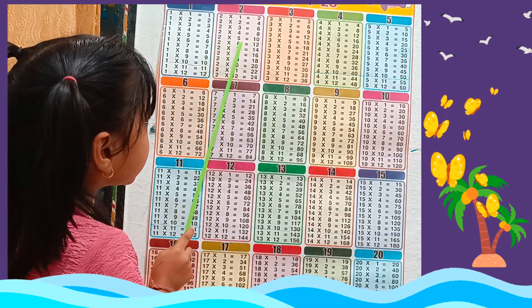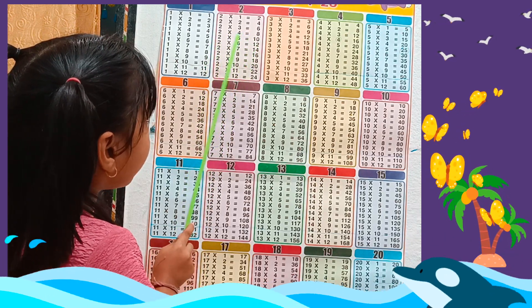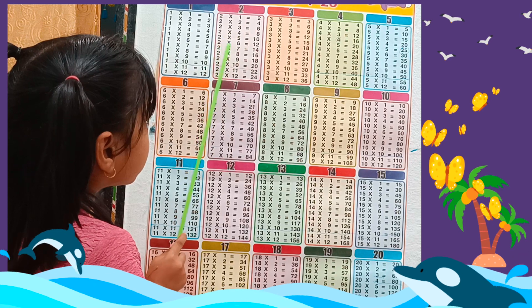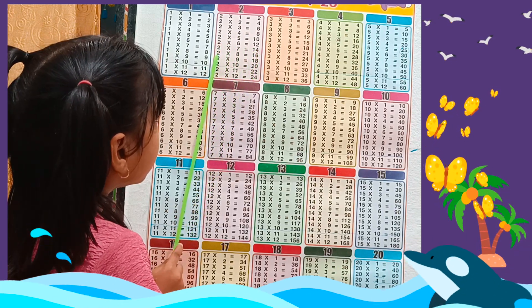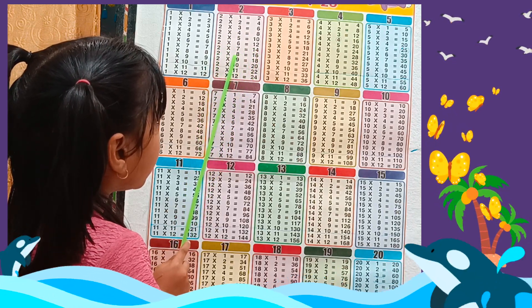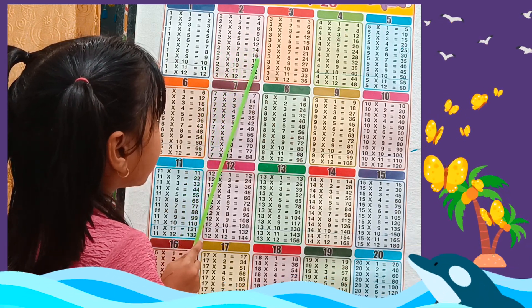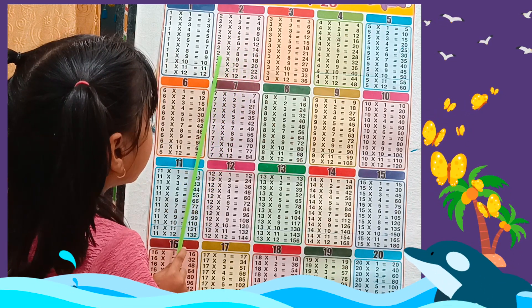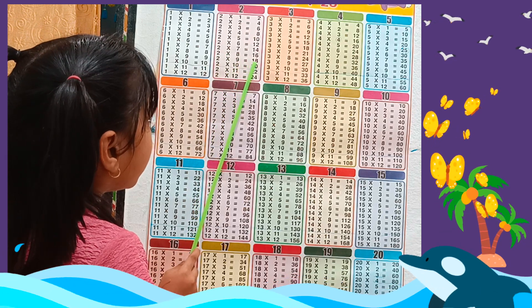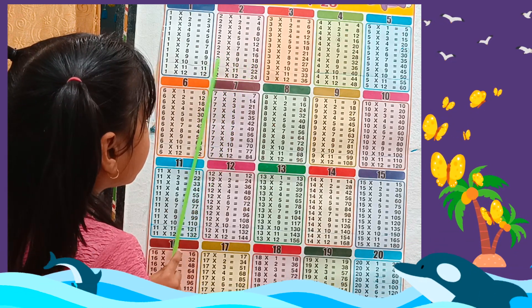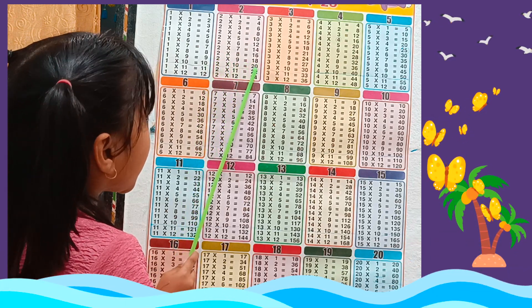2 6s are 12, 2 7s are 14, 2 8s are 16, 2 9s are 18, 2 10s are 20.